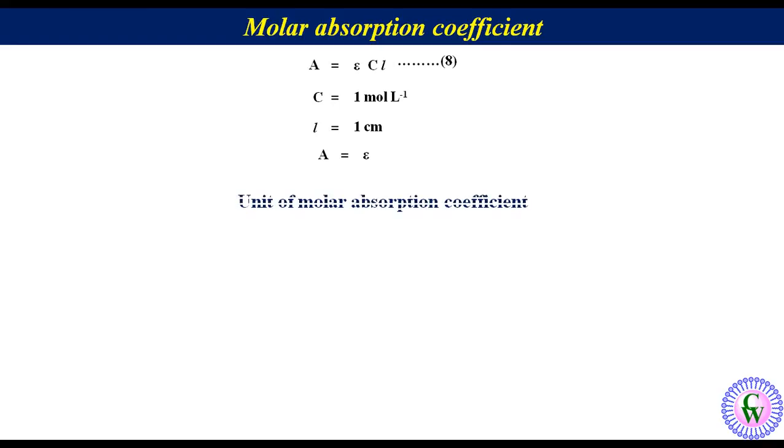Unit of molar absorption coefficient. The rearranged form of equation number 8 can be written as epsilon is equal to A upon C into L. We know that A is a dimensionless quantity. So, put 1 for that upon unit of concentration that is mole liter inverse into unit of L which is centimeter. So, the unit of molar extinction coefficient will be mole inverse liter centimeter inverse.